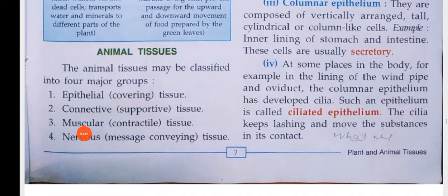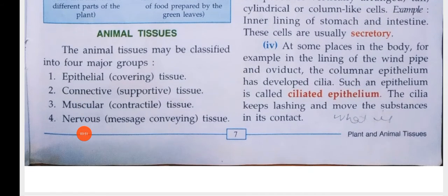Now if we talk about animal tissues, you can divide them into four major groups: epithelial, connective, muscular, and nervous. Epithelial tissue functions as a covering. Connective tissue provides support. Muscular tissue is contractile. And nervous tissue transmits signals.